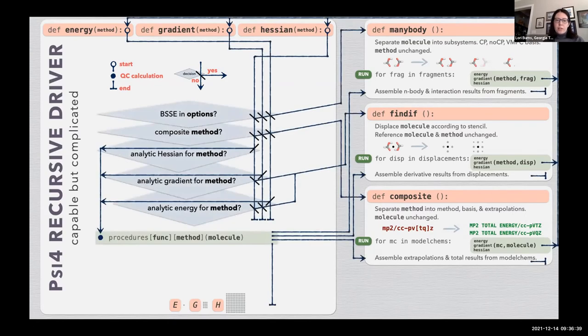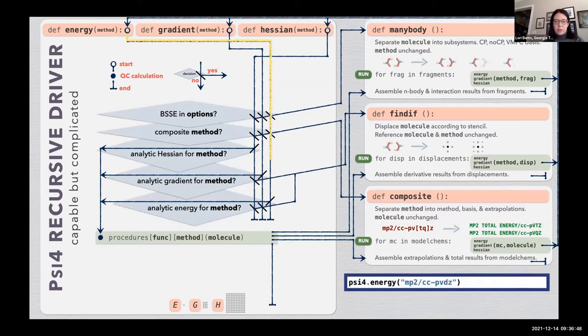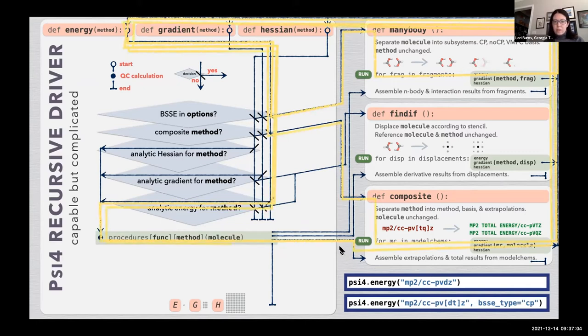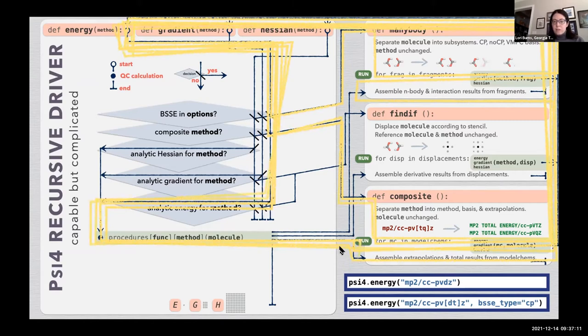The driver itself becomes a procedure of asking a lot of questions and routing through all of these functions. So a single point energy calculation is pretty straightforward, runs the calculation and gives the energy, gradient, or hessian. But a nested many-body composite method ends up traversing this whole driver very many times in order to finally produce the desired energy.